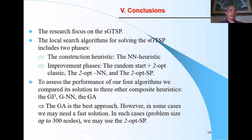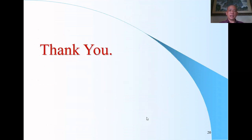So in conclusion, the research focuses on the symmetric GTSP. The local search algorithms include two phases: the construction heuristic using nearest neighbor heuristic, and improvement phase includes three algorithms combined with 2-opt: 2-opt classic, 2-opt with nearest neighbor, and 2-opt with shortest path by Dijkstra's algorithm. We also compared our solution with other composite heuristics, for example GI3, GNN, and GA. In general, GA is the best approach. However, in some cases, for problem sizes up to 300 nodes, the 2-opt SP is better. Thank you for your listening. Goodbye.